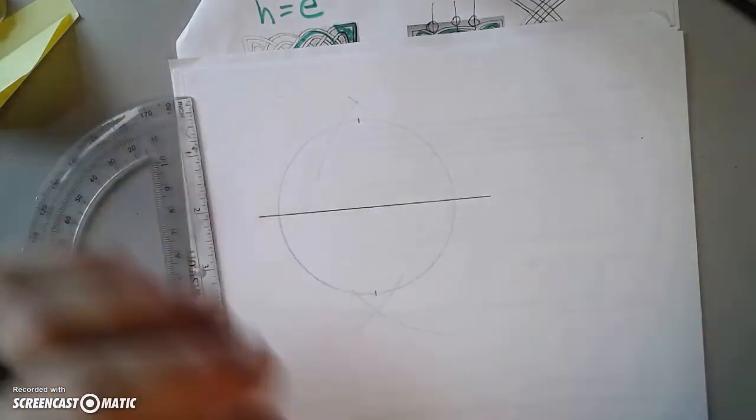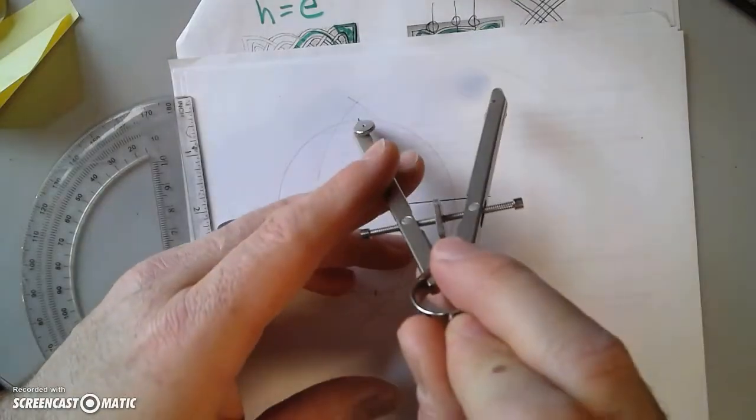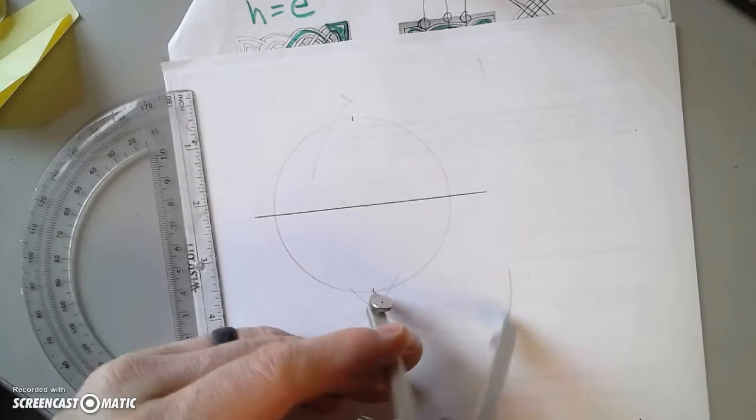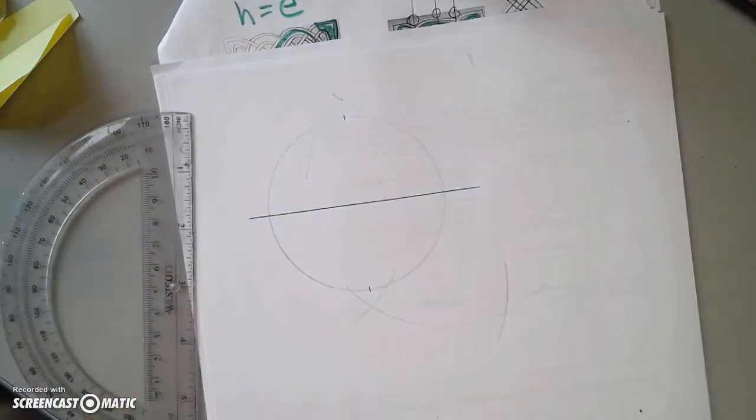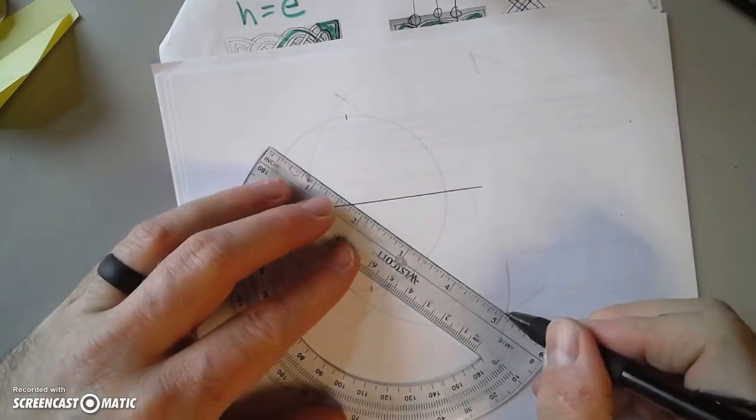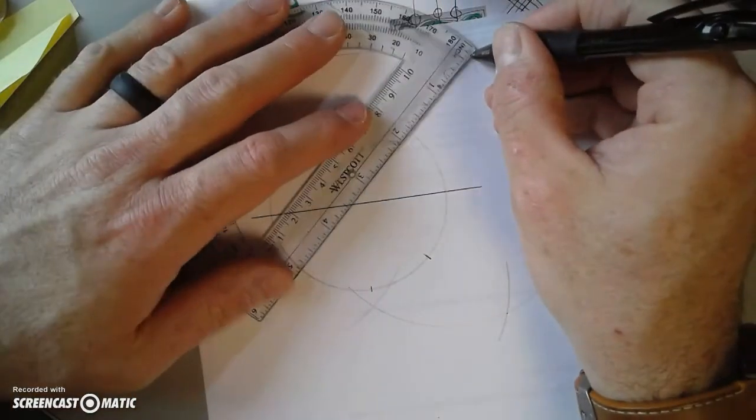So perpendicular bisectors just like that. Now my circle is divided into four pieces. I just need to subdivide it into eight pieces now, so I'll do perpendicular bisector.